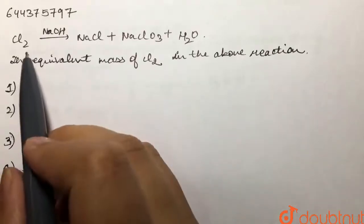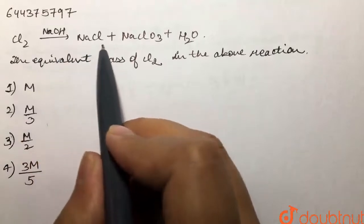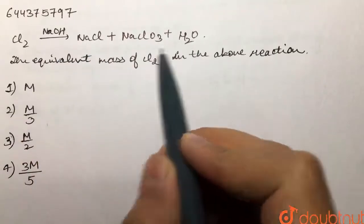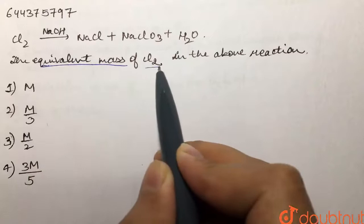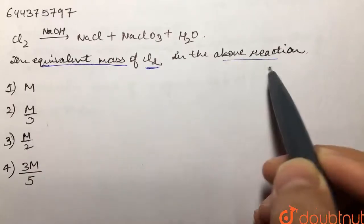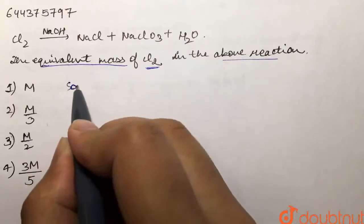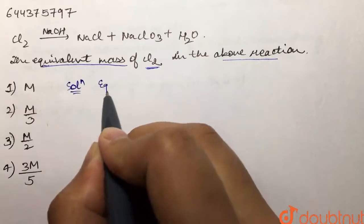Our question is: chlorine reacts with NaOH to form NaCl, NaClO₃, and water. The equivalent mass of chlorine (Cl₂) in the above reaction is what? We are given this reaction and we are supposed to find out the equivalent mass of chlorine.